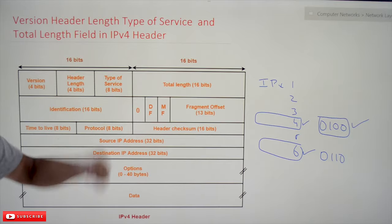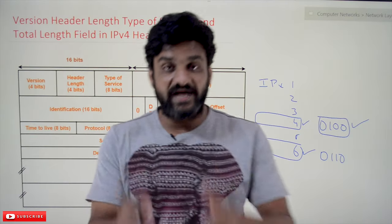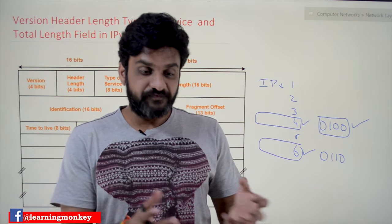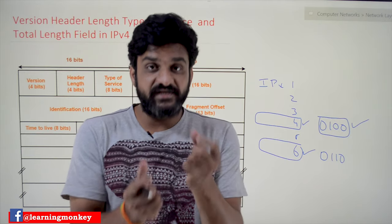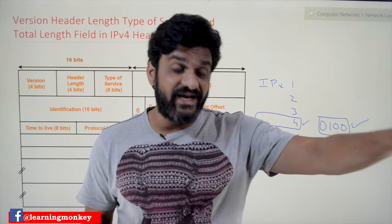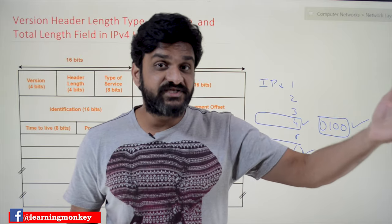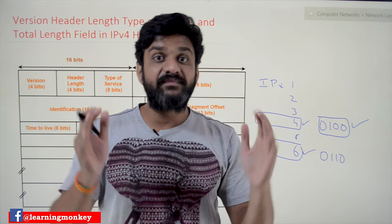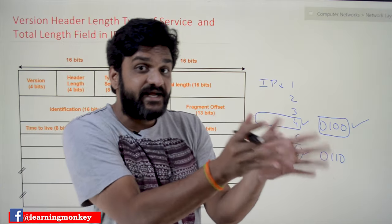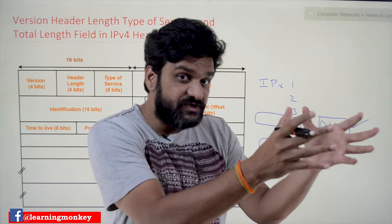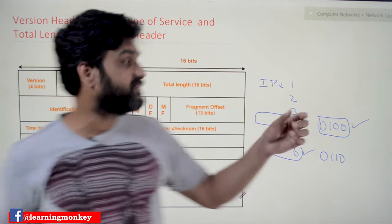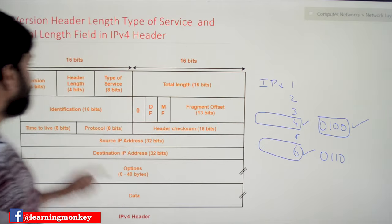The purpose of placing the version bits at the start of the IPv4 header is that whenever a packet is received, by identifying those version bits, the receiver will execute only the program related to that version. If it is version 4, the IPv4 processing code executes; if it is version 6, the IPv6 processing code executes. So the version field decides which part of the program is to be considered.